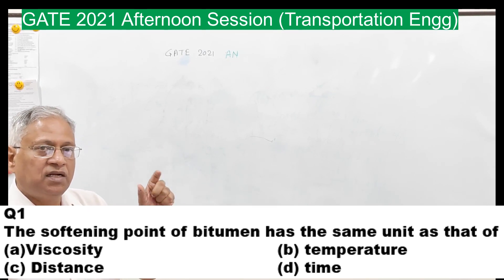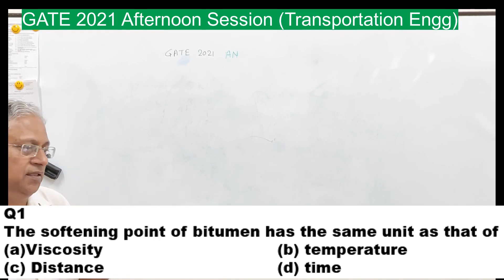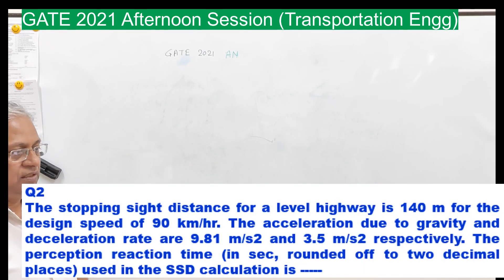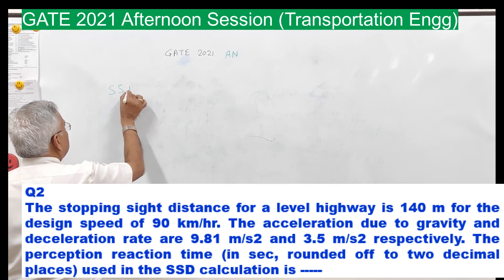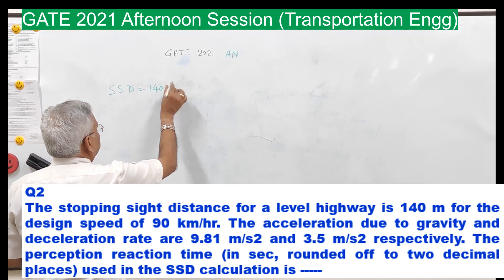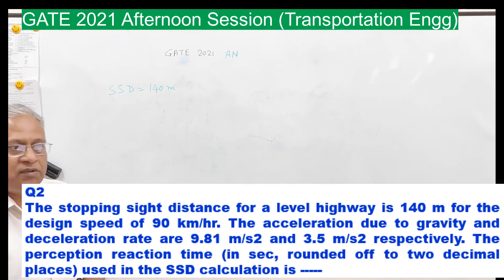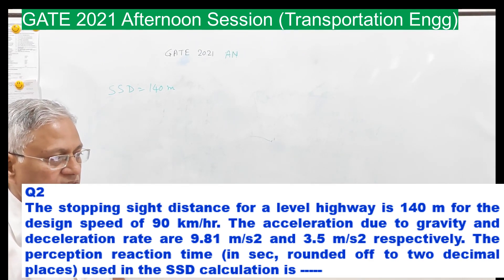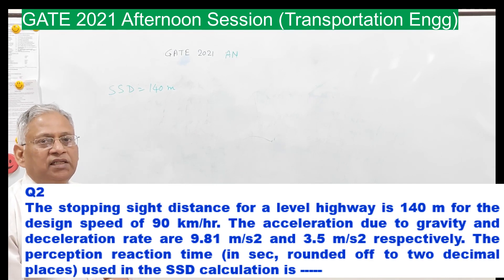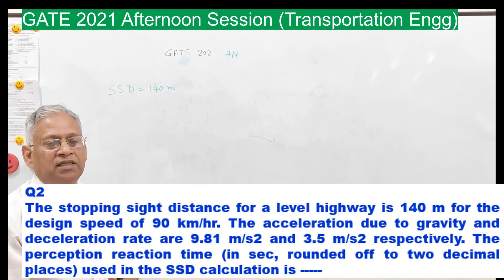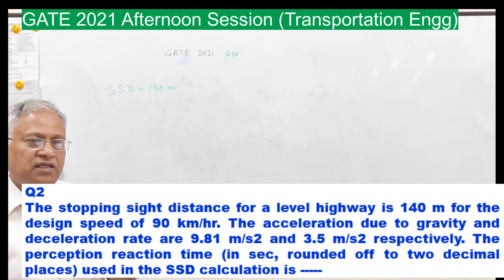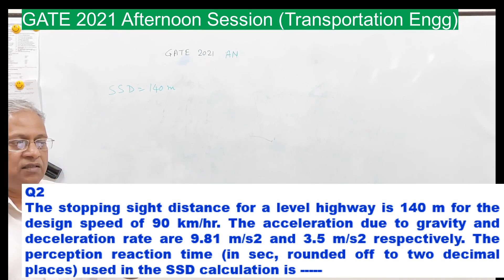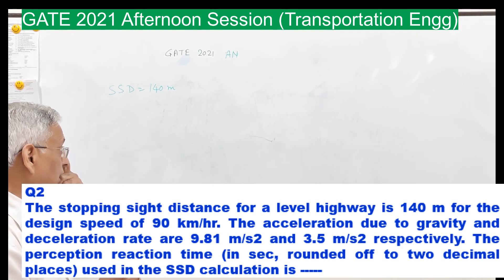The temperature at which the bitumen attains a particular amount of softening. The second question: the stopping sight distance for a level highway is 140 meters, design speed is 90 kilometers per hour, acceleration due to gravity and deceleration are 9.81 and 3.5 meter per second square respectively. The perceptual reaction time is to be estimated.